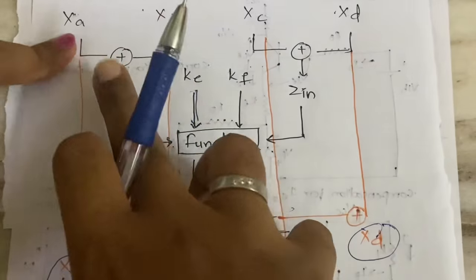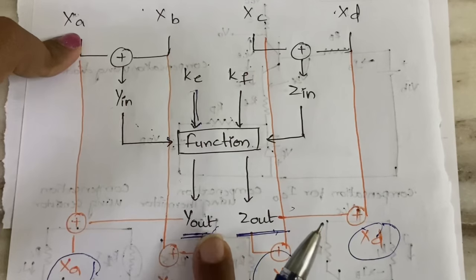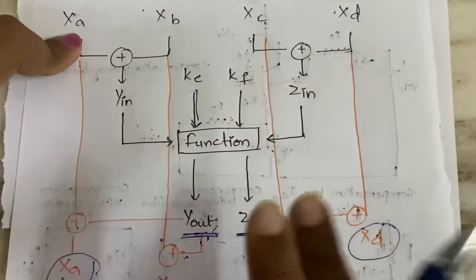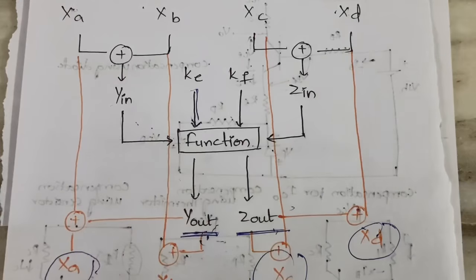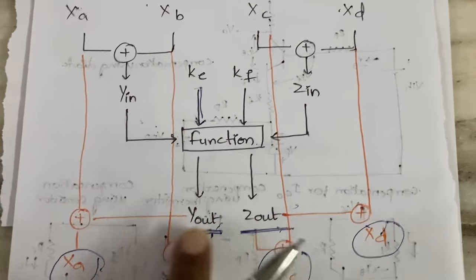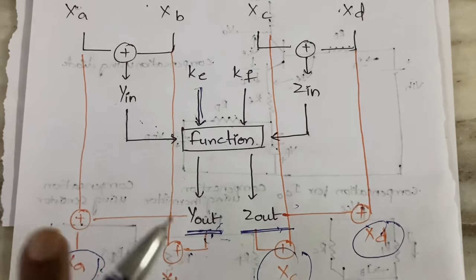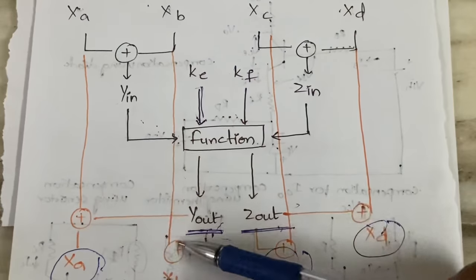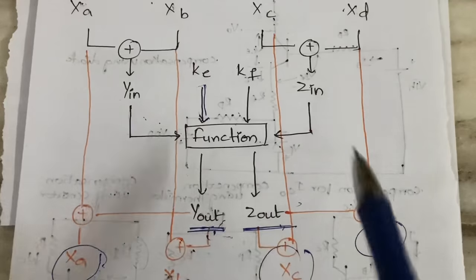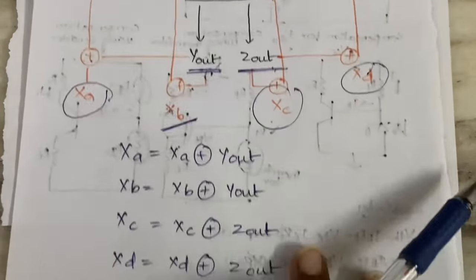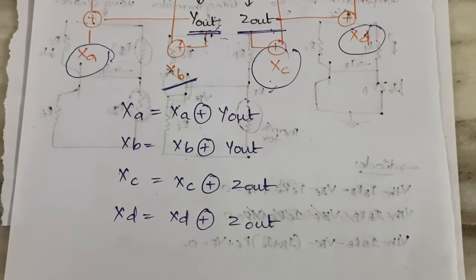To summarize even rounds: for Xa and Xb you use Yout, and for Xc and Xd you use Zout. Xa XOR Yout gives new Xa; Xb XOR Yout gives new Xb; Xc XOR Zout gives new Xc; Xd XOR Zout gives new Xd.